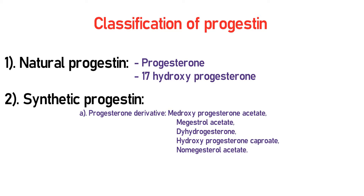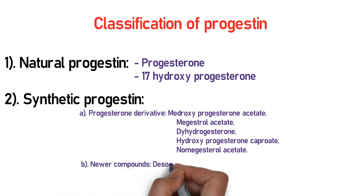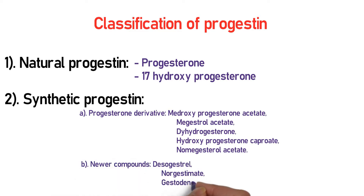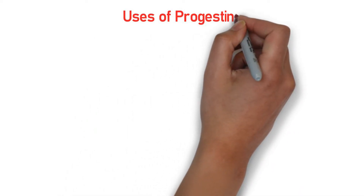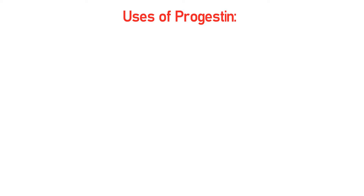The drugs found in the progesterone derivative group include medroxyprogesterone acetate, megestrol acetate, dydrogesterone, hydroxyprogesterone caproate, and nomegestrol acetate. Newer compounds in the 19-nortestosterone derivative group include desogestrel, norgestimate, and gestodene.